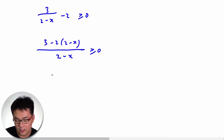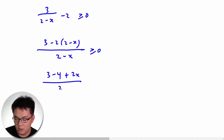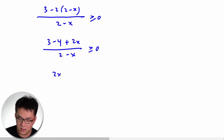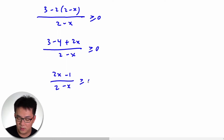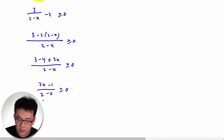Now I'm going to expand this. After expanding, we get 3 minus 2(2 minus x) over (2 minus x) bigger than or equal to 0, which gives us (2x minus 1) over (2 minus x) bigger than or equal to 0.